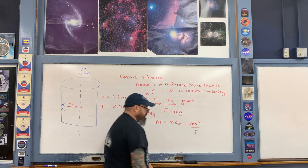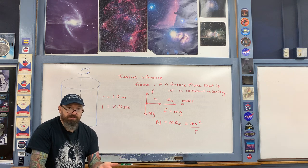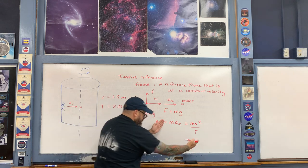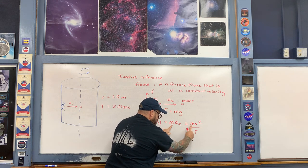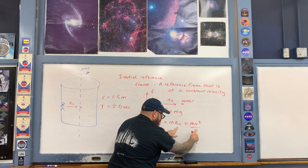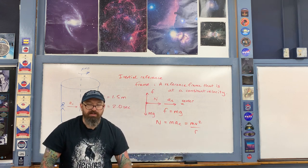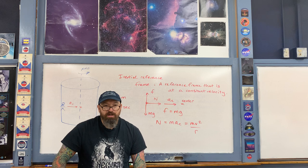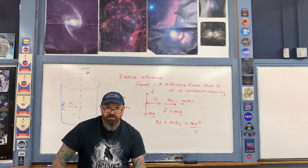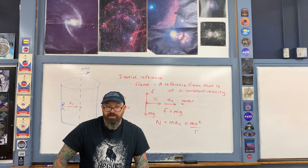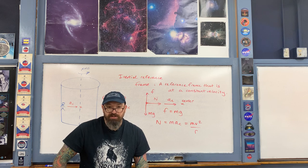To solve the problem, we'll cancel out the mass and calculate the centripetal acceleration. We'll then compare that acceleration to 9.8 m/s² by calculating how many g's of acceleration the rider experiences.